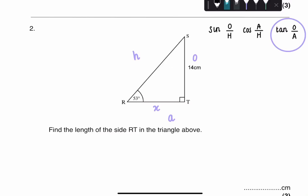So your equation will be tan 53, because you're given the angle in this case, equals opposite, which in this case is 14, divided by adjacent. Adjacent, in this case, is our unknown, which I wrote as X.